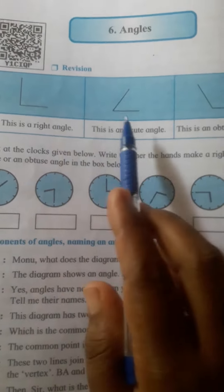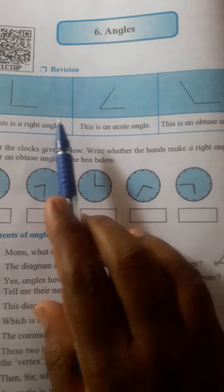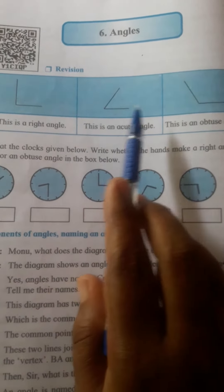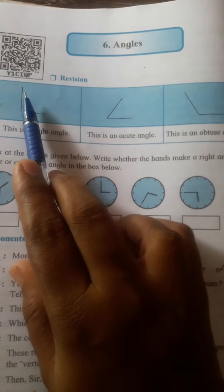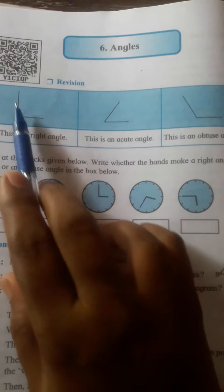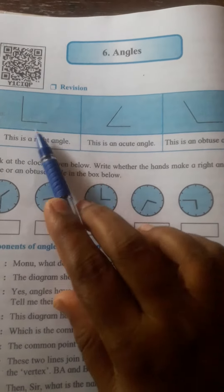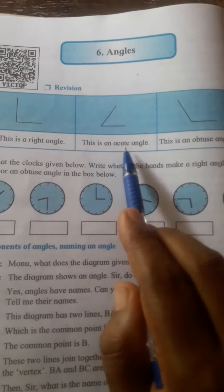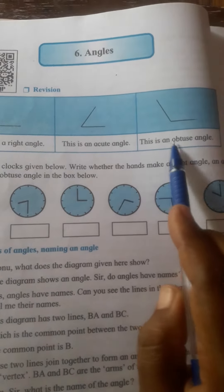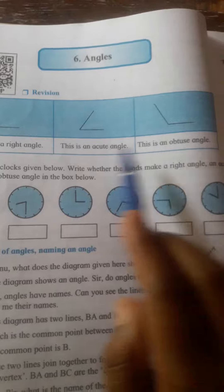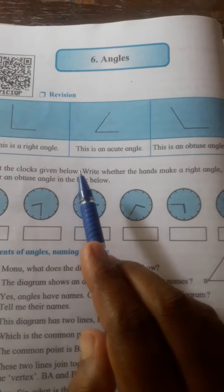See here, first we have a revision of what you learned in 4th standard. There are three types of angles: right angle, as shown here; less than right angle we call acute angle; and greater than right angle we call obtuse angle. This is what we learned in 4th standard.